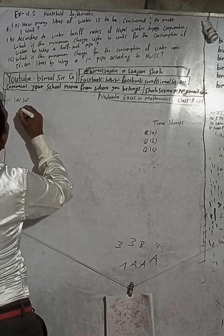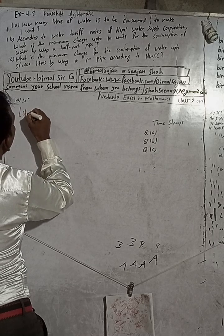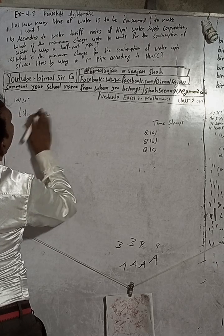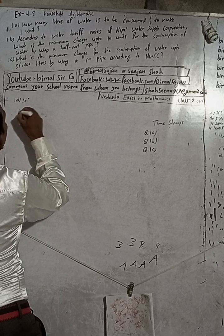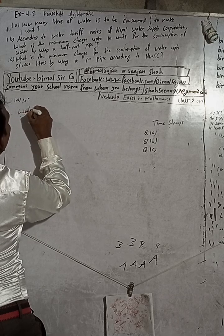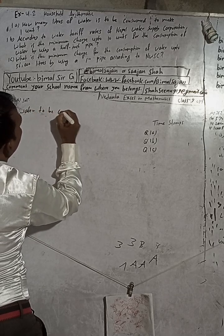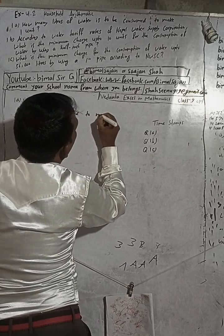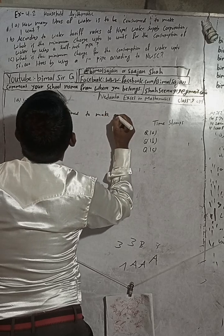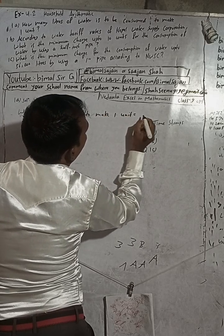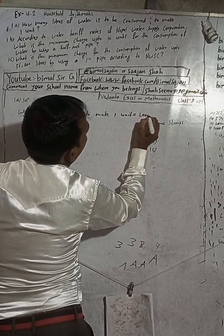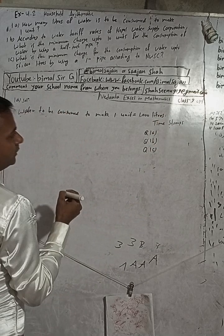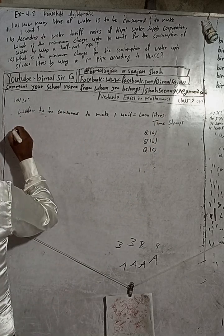Liters of water to be consumed to make one unit is equal to one thousand liters. That's a simple one-line answer.